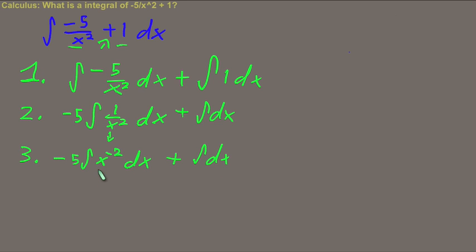This we just get to use the reverse of our derivative's power rule on. So our answer is going to be negative 5, negative x to the negative 1, plus x.